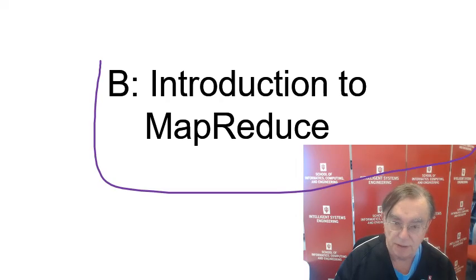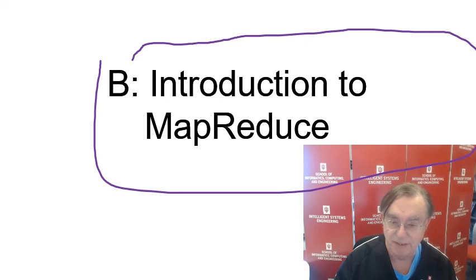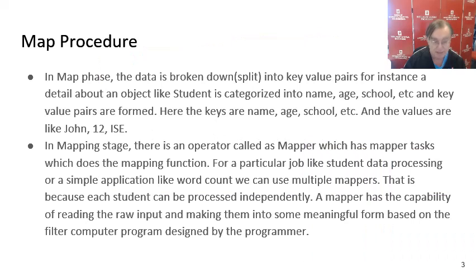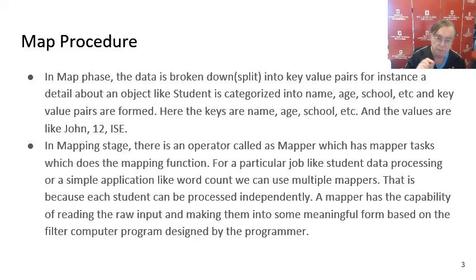Hadoop consists of running a map. The word 'map' means run a filter, run a computing operation, do something. That operation is considered mapping — it reads some data, typically uses those data values to calculate something, and then produces a result. So that's what the map does: reads data, computes, produces results.